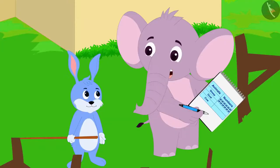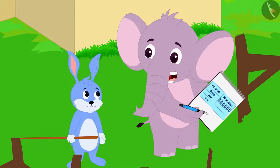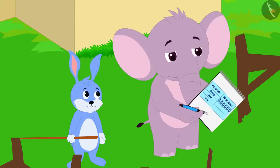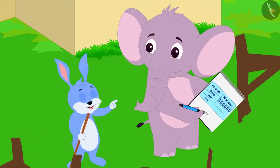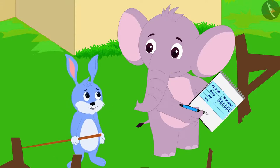Appu said, 'Bunny, I finished counting all my sheep very quickly. But now I see only groups of five tally marks. How will I know what the total number of sheep is?' Bunny laughed and said, 'You just count these groups of five.'